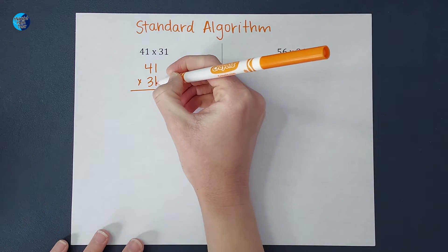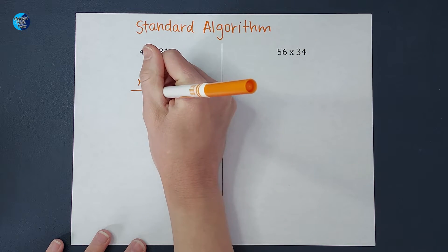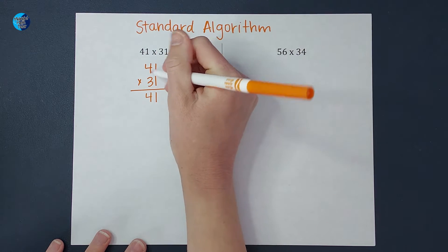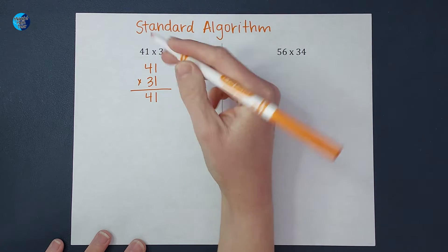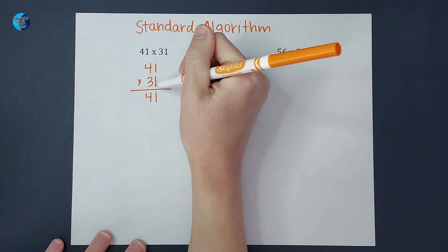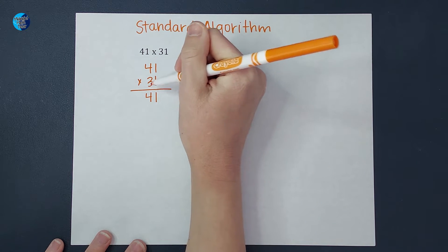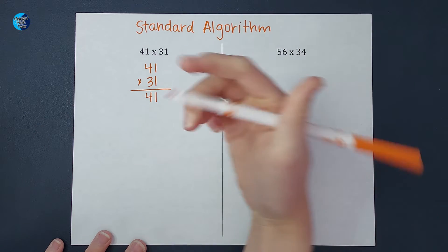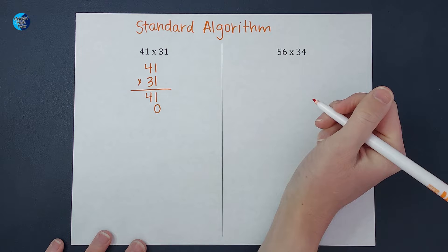Okay, now I'm going to do 1 times 1 is 1. 1 times 4 is 4. So I multiplied the 1. Now I need to multiply the 3. But when you look at this, it's not really a 3. It's actually a 30. I multiplied the 1 of the 31. Now I'm multiplying the 30. So to account for that, I put a 0 here as a placeholder.